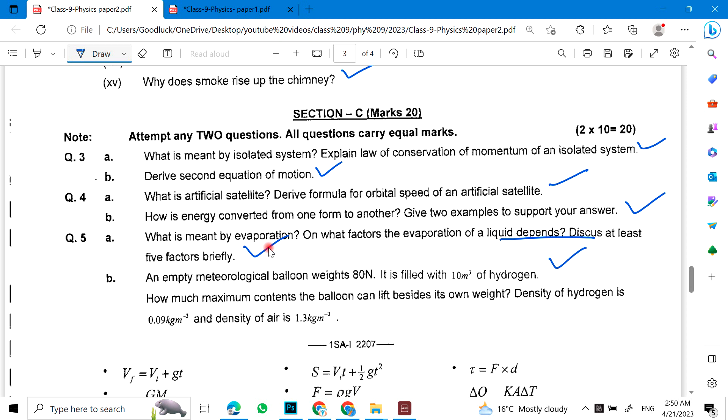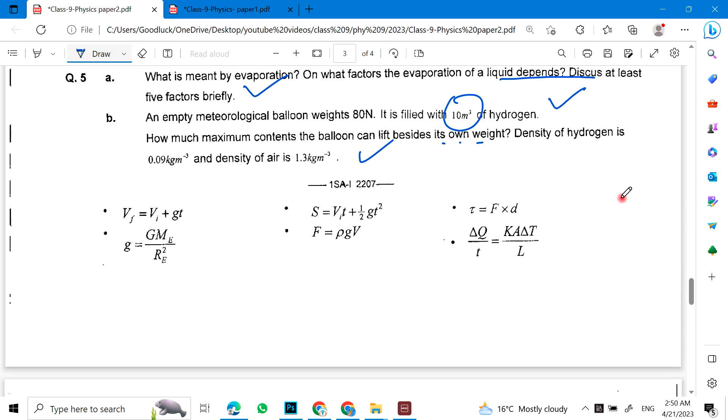An empty meteorological balloon weighs this much. It is filled with 10 m³ of hydrogen. How much maximum content can the balloon lift by its own weight? Density of hydrogen is this and air is this. So here you have formulas that you use.